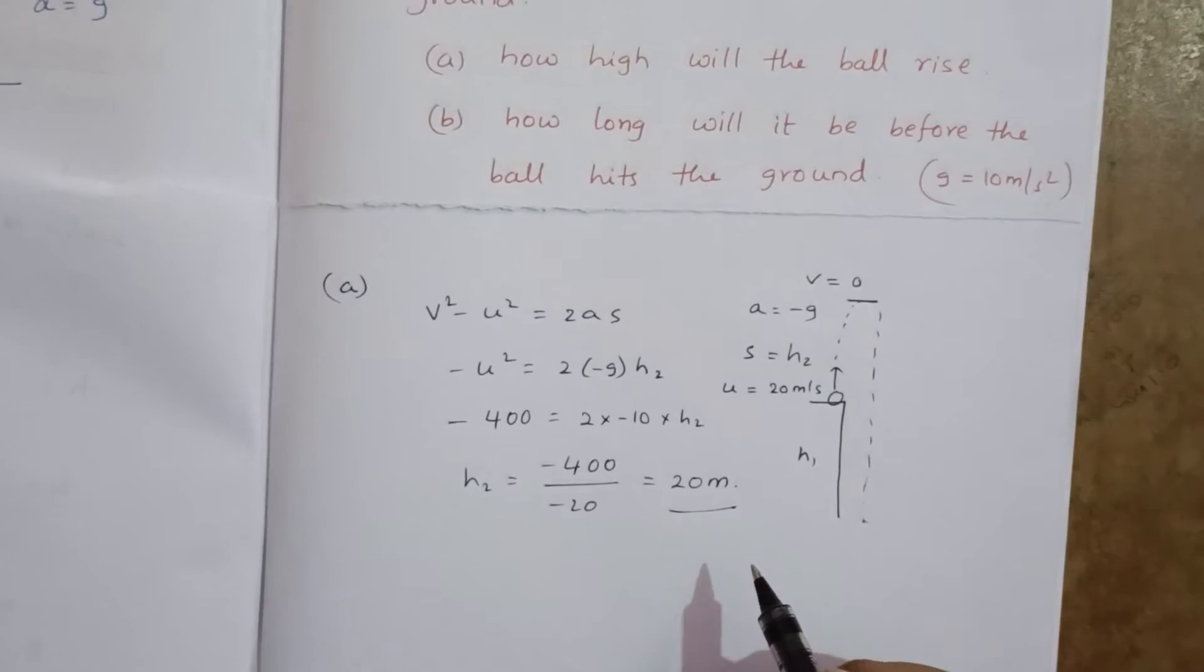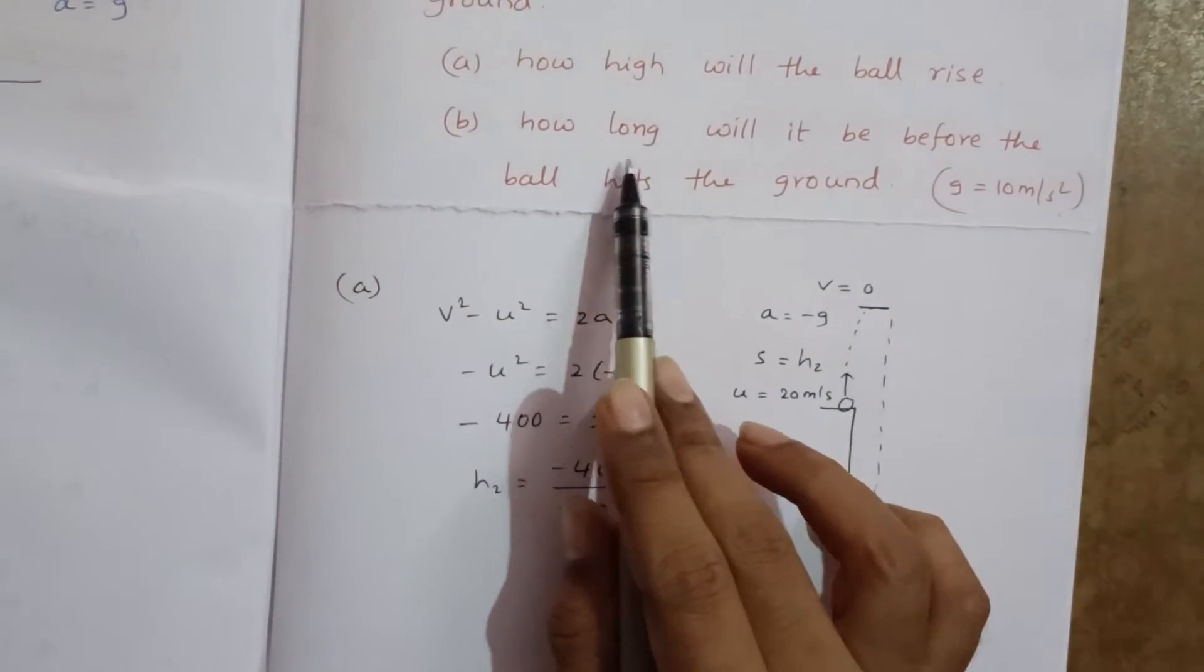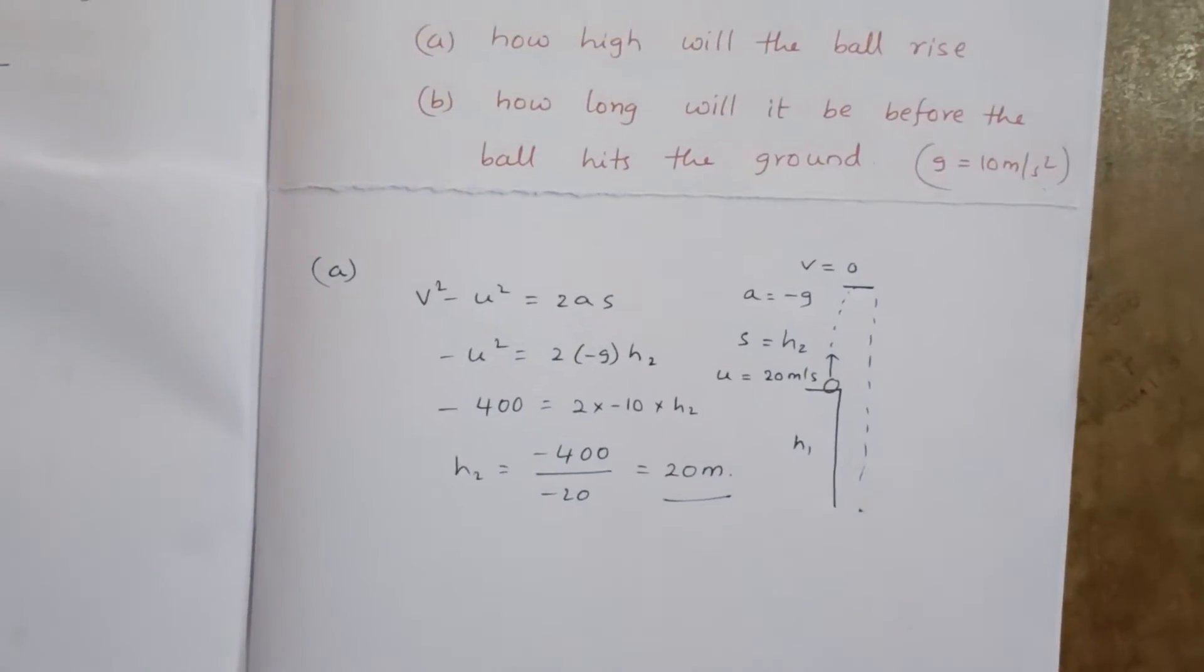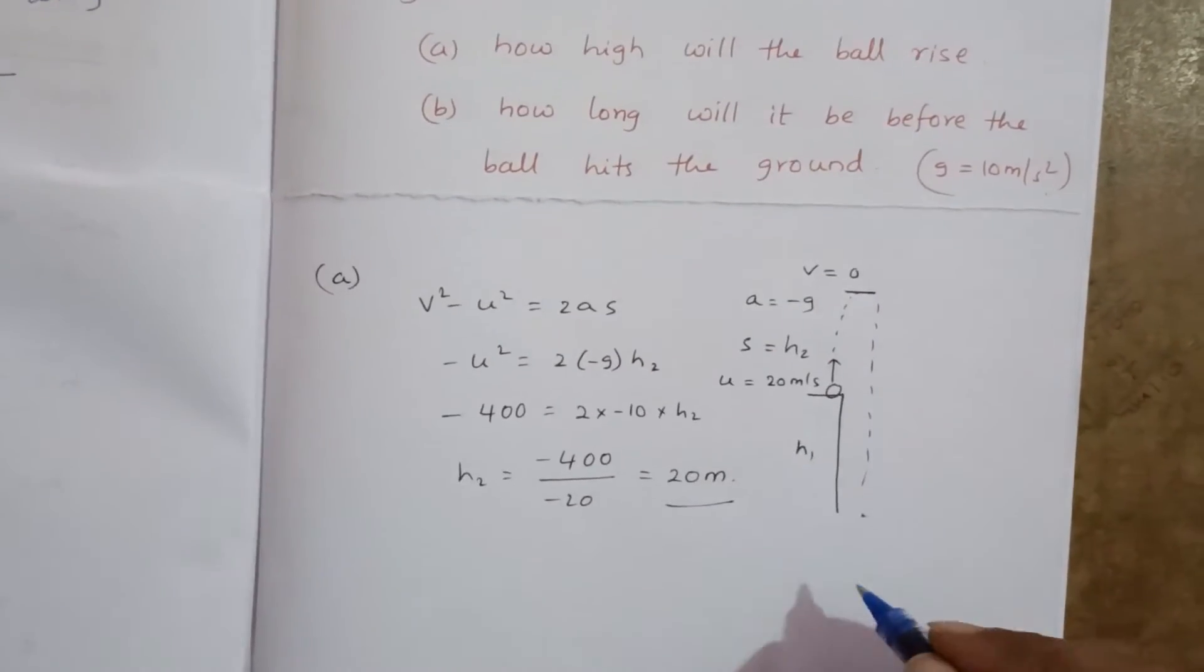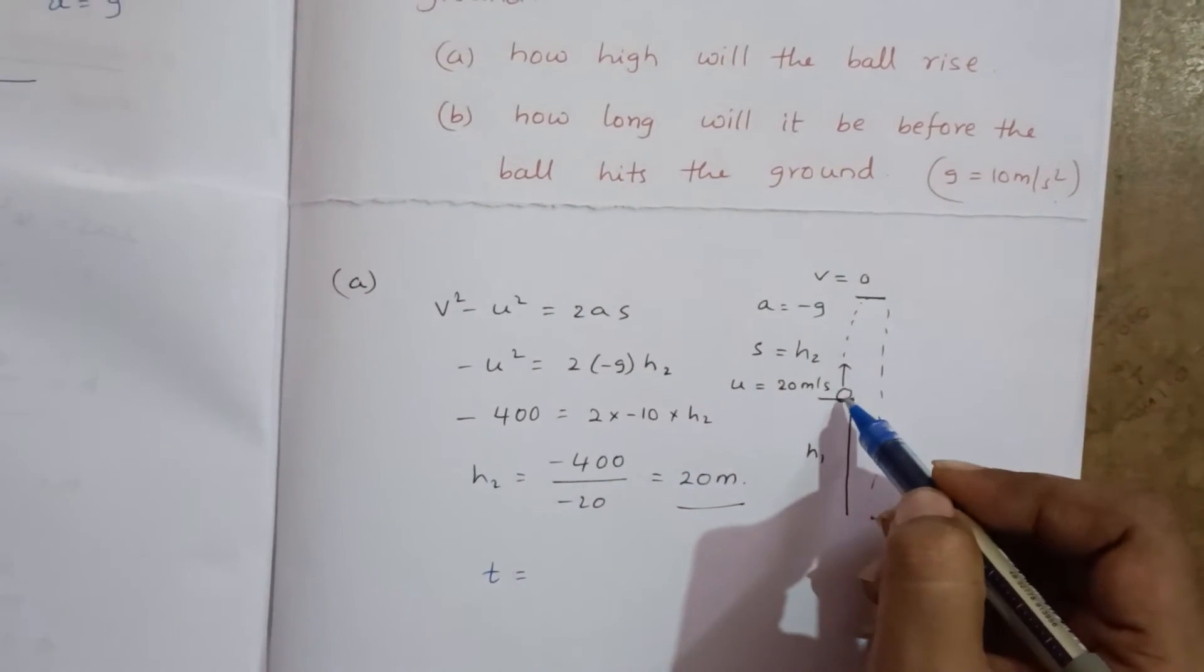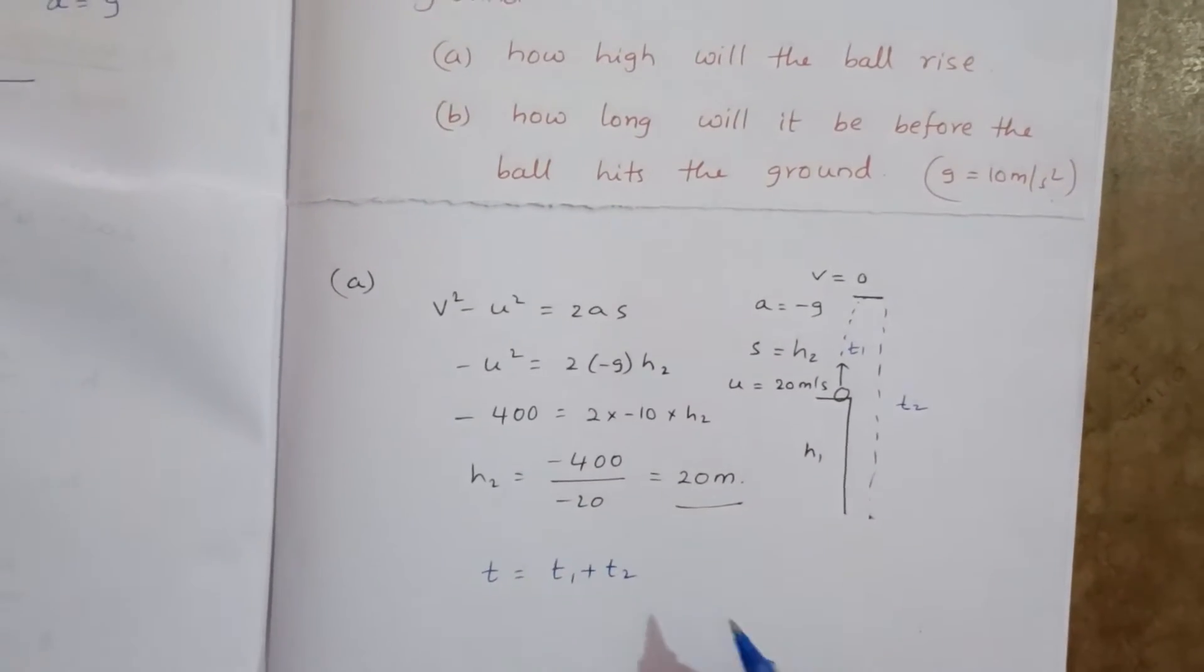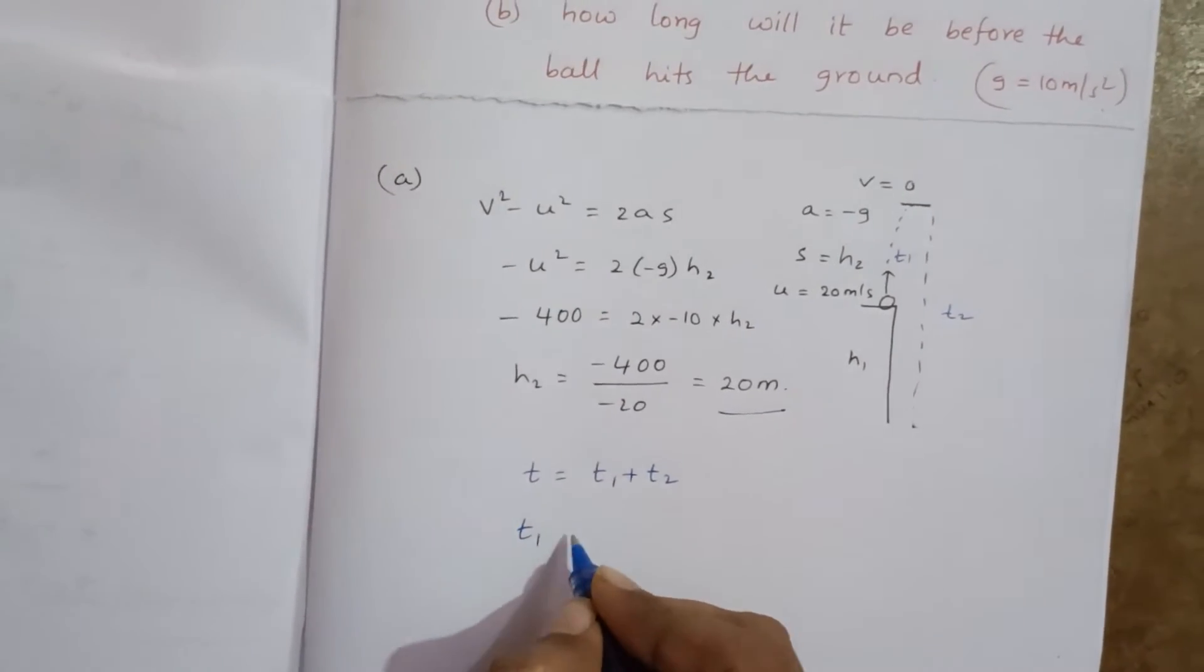Next he asked how long will it be before the ball hits the ground. So we should calculate time. Here we have to find total time. So if total time is t, as it is going up t₁, coming down t₂, t₁ plus t₂ we should do.